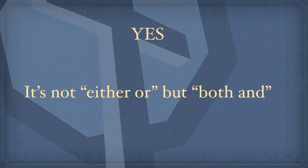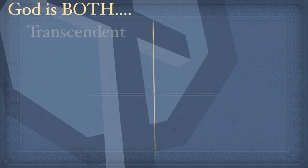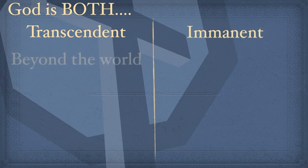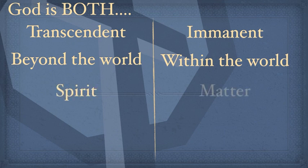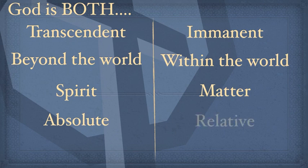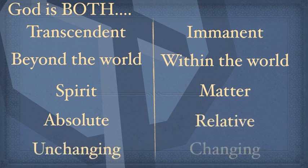Transcendent or worldly, absolute or relative, way off in heaven or a part of the goodness of the earth? Process theology says to this, yes. It's not either or, it's both and. It's not either or, it's both and. God is both transcendent and eminent. God is both beyond the world and within the world. God is spirit, but also in some sense, God is matter. God is absolute, absolutely absolute. But God is also relative. God is unchanging, but also God is changing.